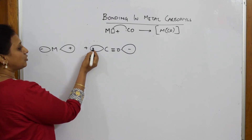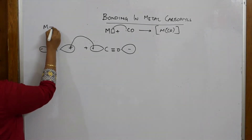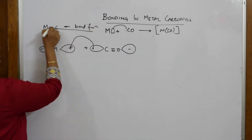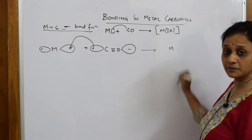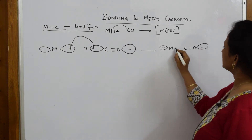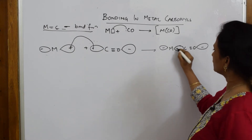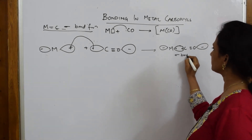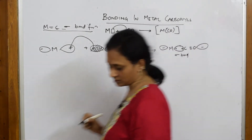In step one, there is a shift of sigma electrons from carbon to the metal. So a sigma bond is formed first — sigma bond formation. How does this look? Your metal is here, the carbonyl is here, and together they form one single lobe between the two. Both the lone pairs are bonded between this — this is your sigma bond formation. These are your lone pairs after sigma bond formation.